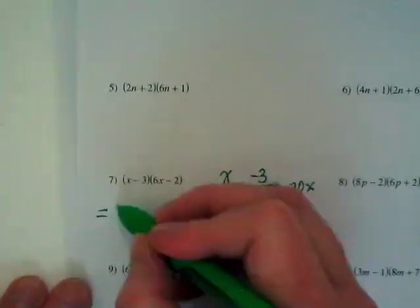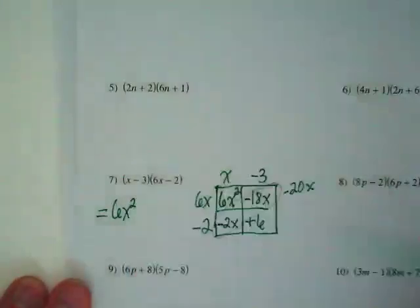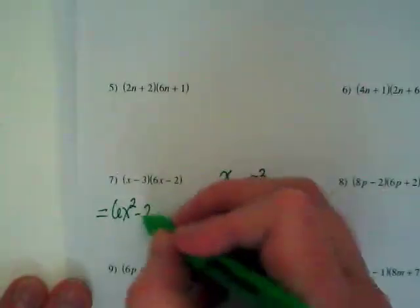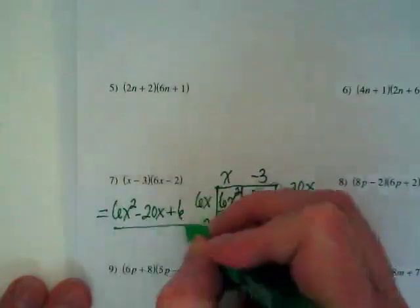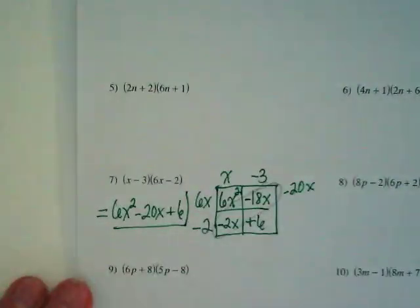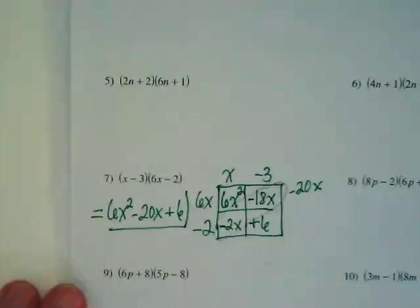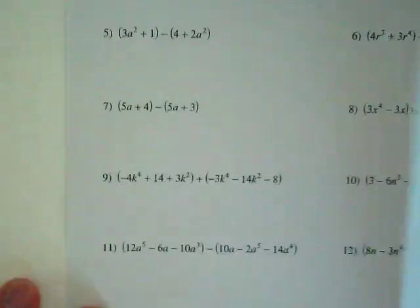So I end up with 6X squared minus 20X plus 6. And today is just going to be a practice day. Are we good with this? Okay. There are some on the back that have trinomials. So that's where we'll end up with a box with 6 spaces.